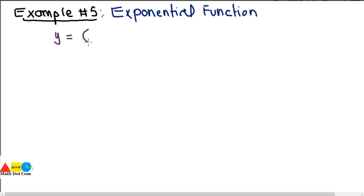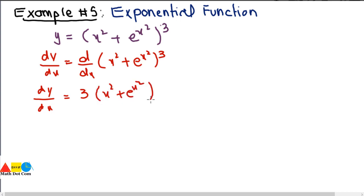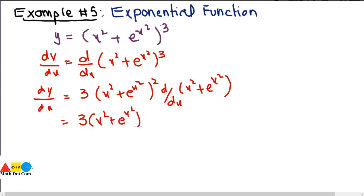Let's look at an exponential composite function: y = (x² + e^(x²))³. First, apply the power rule — bring the 3 to the front, write the function as it is, and subtract 1 from the power: 3(x² + e^(x²))². Then take the derivative of the inner function x² + e^(x²). The derivative of x² is 2x by the power rule.